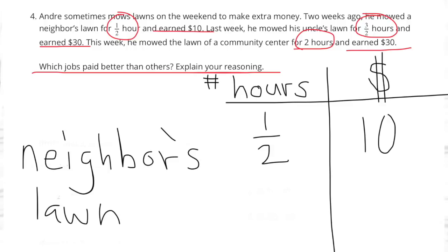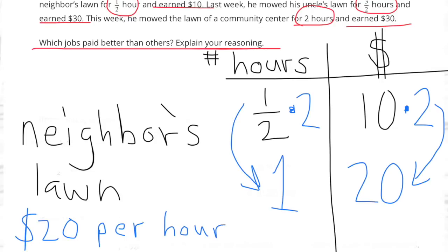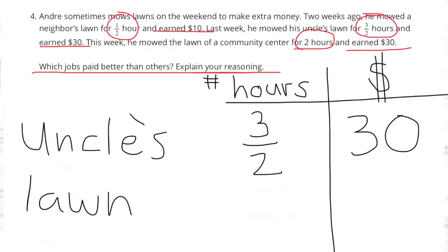His neighbor's lawn took him a half hour and he got paid $10. Multiply the half hour times two and you have one full hour. So you multiply the $10 times two and you have $20. He was paid $20 per hour to mow his neighbor's lawn.